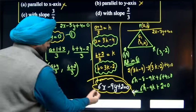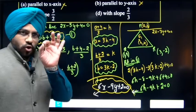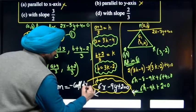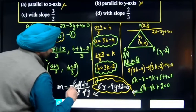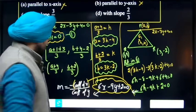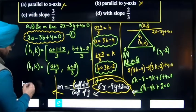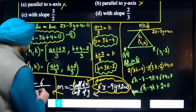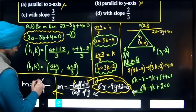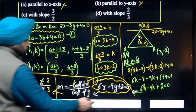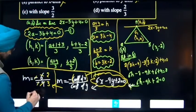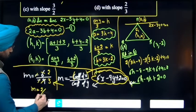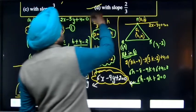Now find the slope of this equation. The slope M equals minus coefficient of x divided by coefficient of y, which is minus 6 divided by minus 9, giving slope M equal to 2 by 3. So the final answer has slope 2 upon 3, which corresponds to option D.